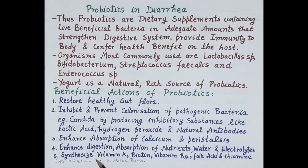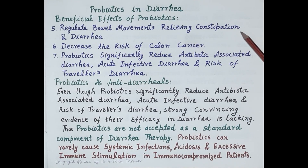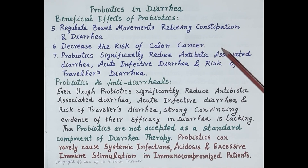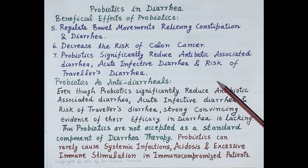Some beneficial bacteria synthesize vitamin K, biotin, vitamin B12, folic acid, and thiamine. By regulating the balance of gut microflora, probiotics regulate bowel movements, relieving both constipation and diarrhea. Since probiotics strengthen the immunity of the colon by restoring growth of beneficial bacteria, they reduce the risk of colon cancer. Probiotics also significantly reduce antibiotic-associated diarrhea and the risk of traveller's diarrhea.